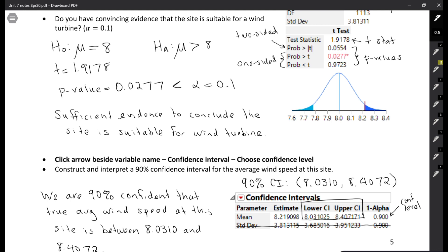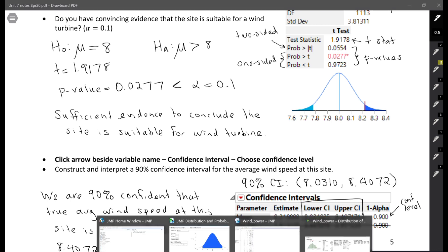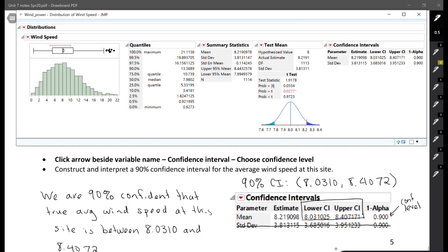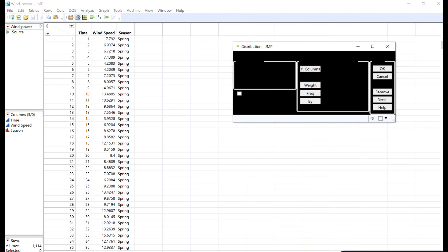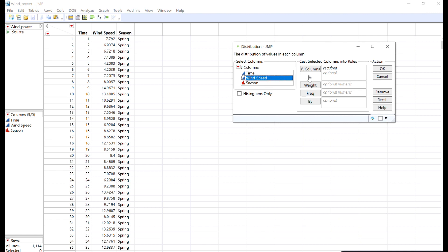One more thing I want to show you is how to break it down by groups. Right now we're looking at wind speed overall, but let's say that we wanted to look at it in groups. I'm going to go back to analyze distribution and look at wind speed again.